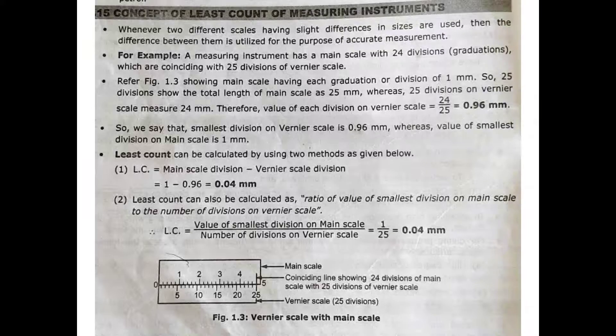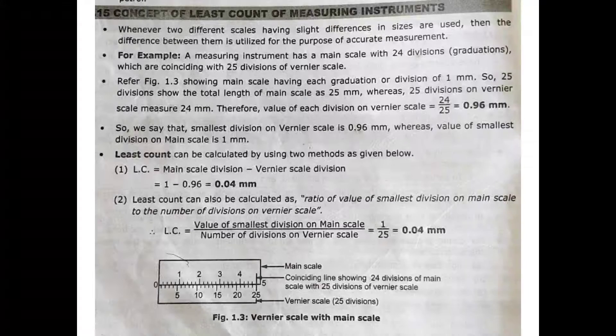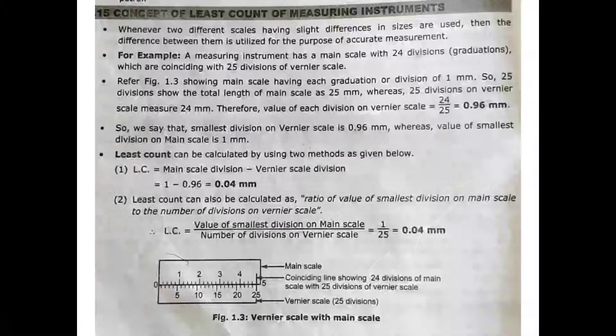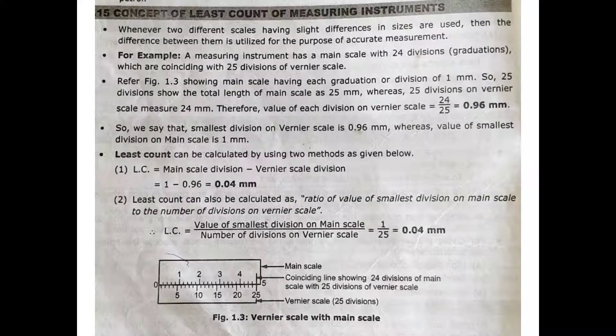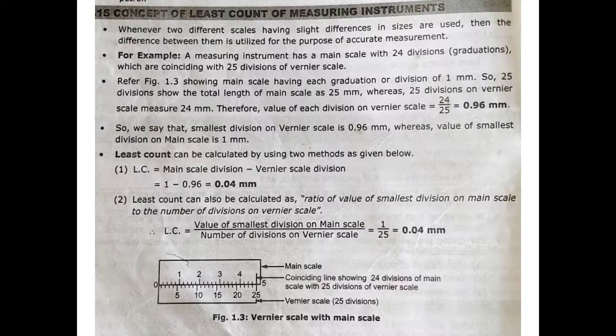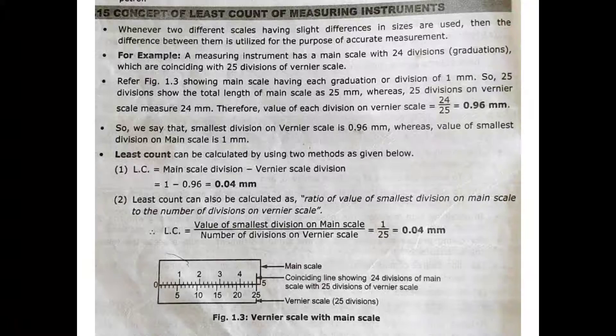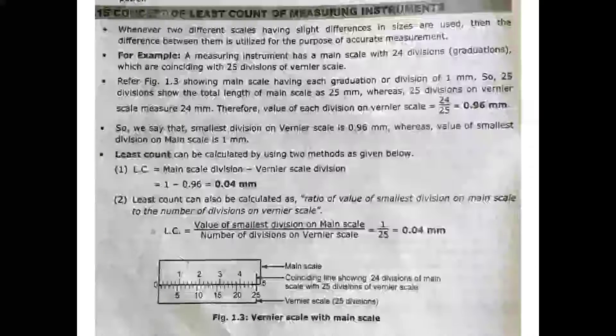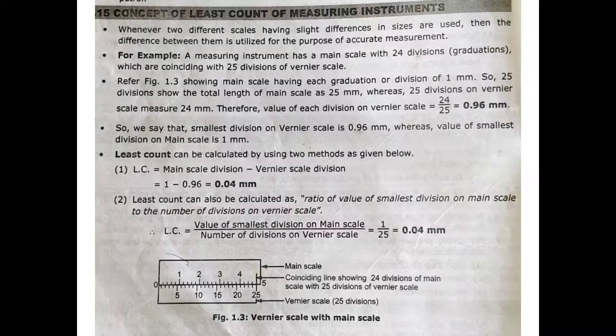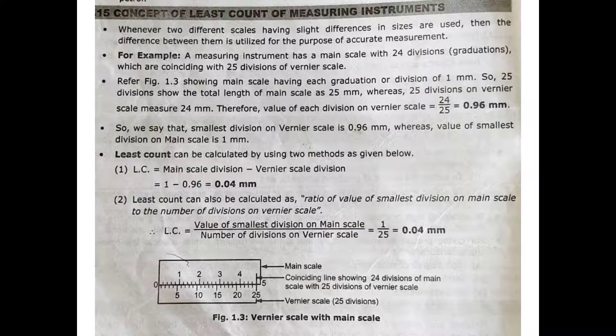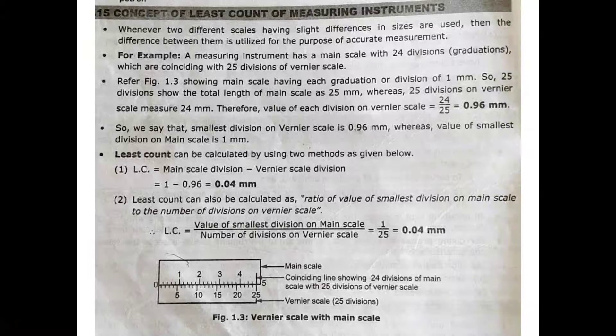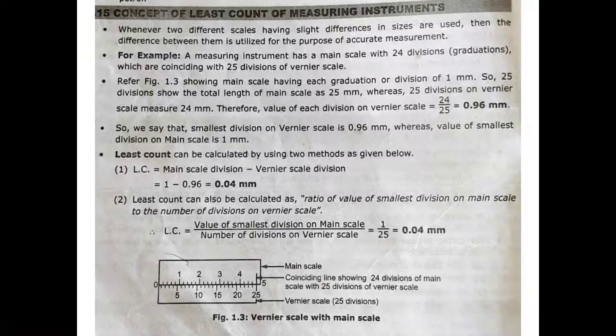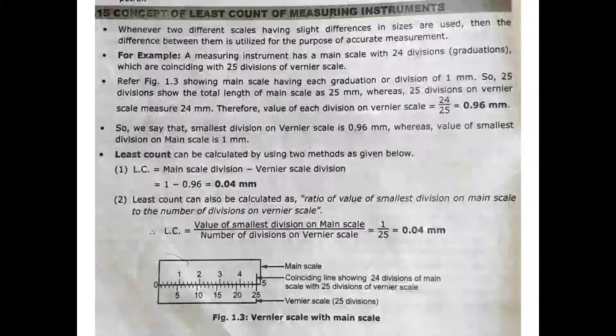Least count can be calculated using two methods. First, least count equals main scale division minus vernier scale division. Second, least count can be calculated as the ratio of the value of the smallest division on the main scale to the number of divisions on the vernier scale.